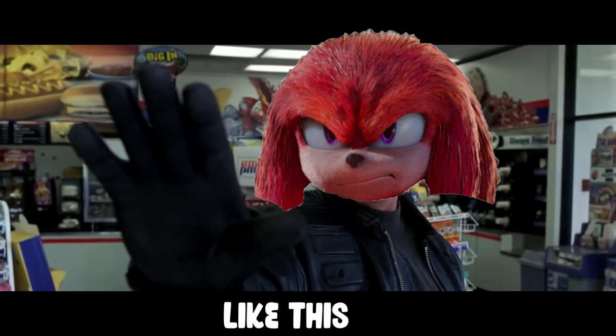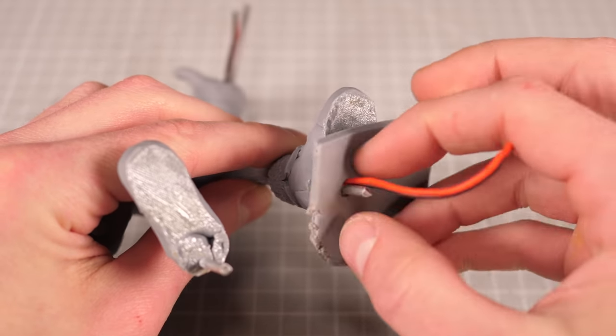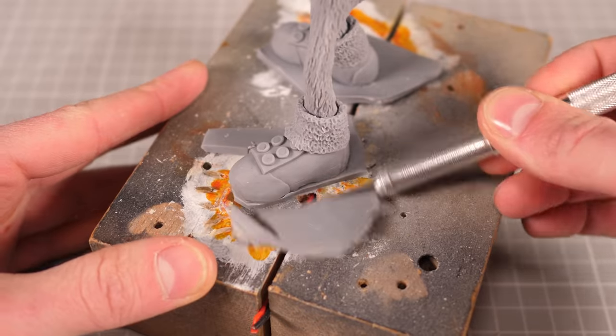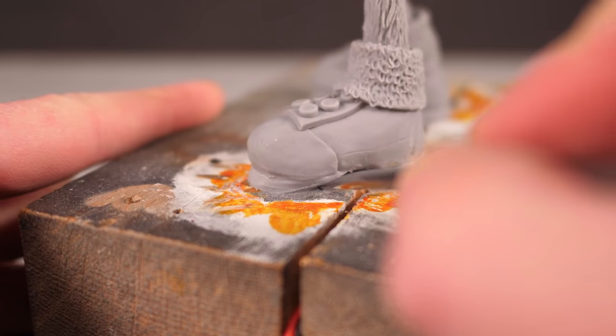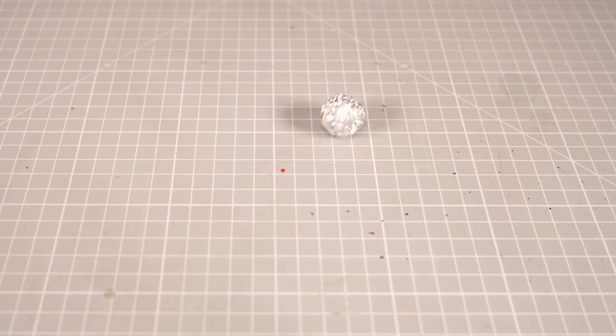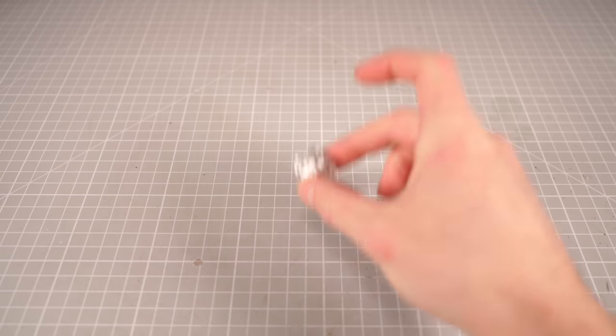Then the other hand follows the exact same process except instead of a closed fist he'll be rocking an open palm talk to the hand. Otherwise after a quick bake I popped Knuckles off his stand and added a couple of sheets of clay to the bottoms of his boots so that I can make his treads underneath. Then it's time to finally make his head.